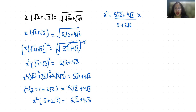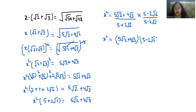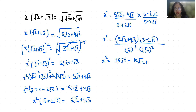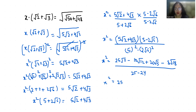Now I'm going to rationalize this and multiply with (5 − 2√6) in the numerator and denominator. After multiplying, the numerator gives 25√2 minus 20√3 plus 20√3 minus 24√2, and the denominator becomes 1.